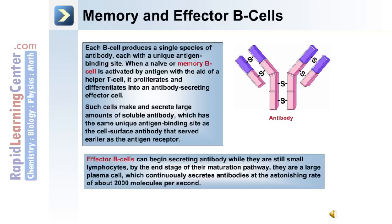Effector B cells can begin secreting antibody while they are still small lymphocytes. By the end of the stage of their maturation pathway, they are a large plasma cell, which continuously secretes antibodies at an astonishing rate of about 2,000 molecules per second.